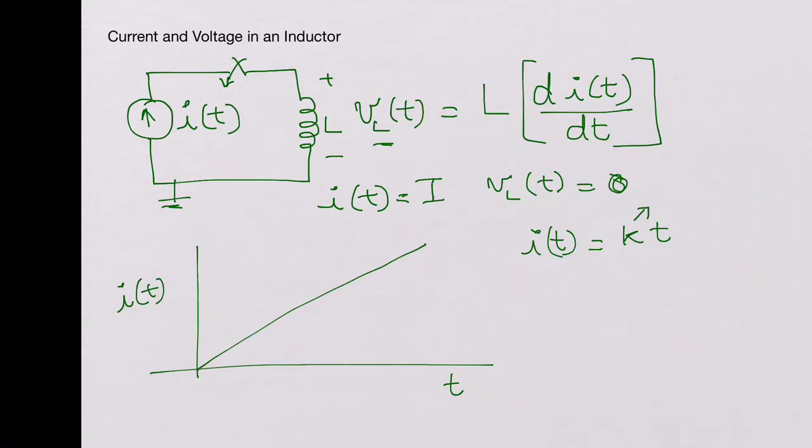So now if you calculate VL(t) for this case, which would be L di(t)/dt, it will be d(kt)/dt, that would be k times L.